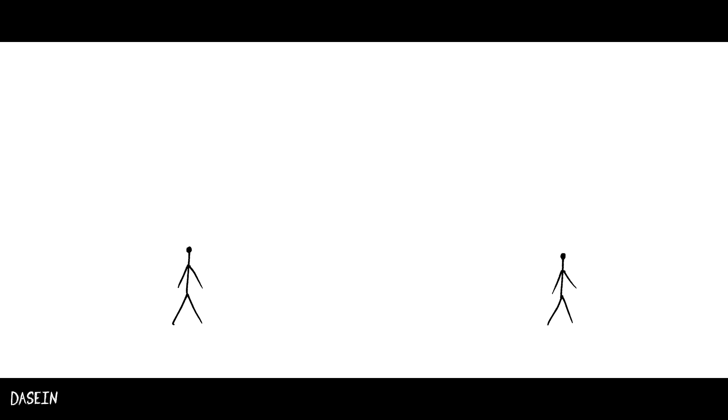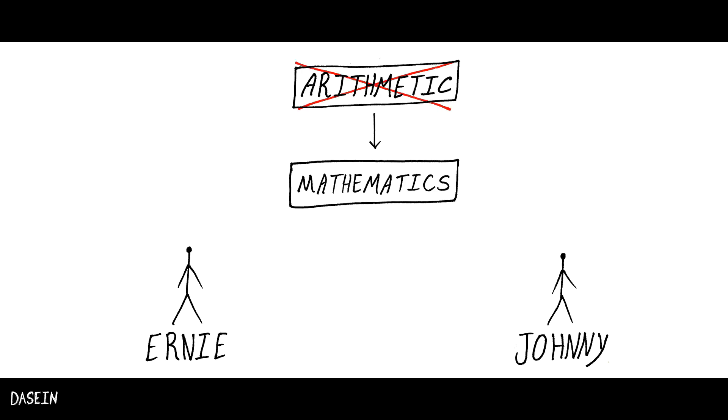Imagine two children called Ernie and Johnny. Instead of learning mathematics by doing arithmetic, they were first forced to learn logic and set theory.